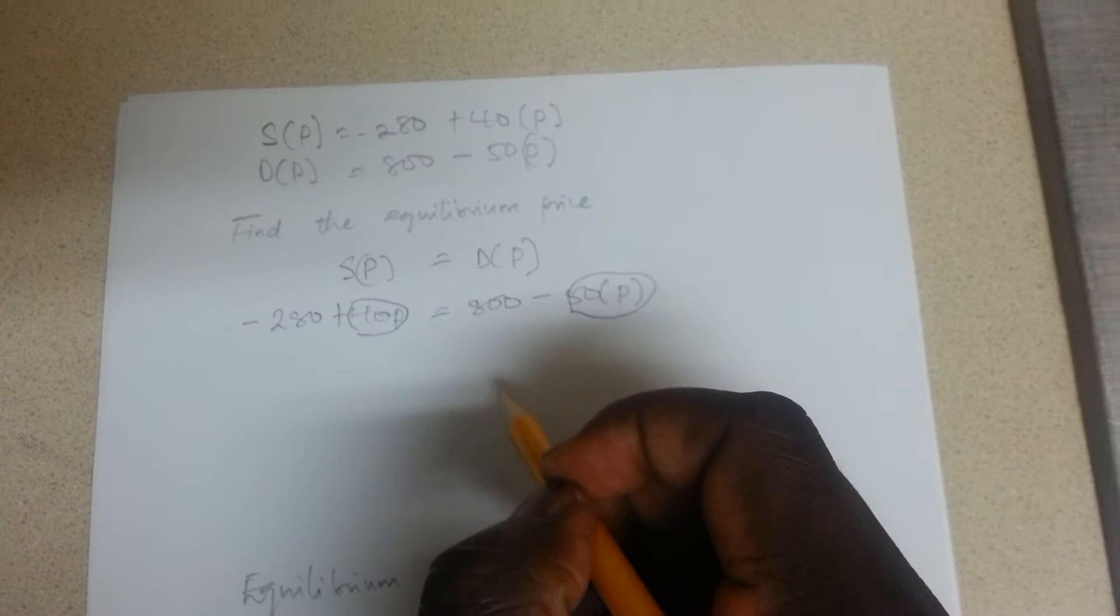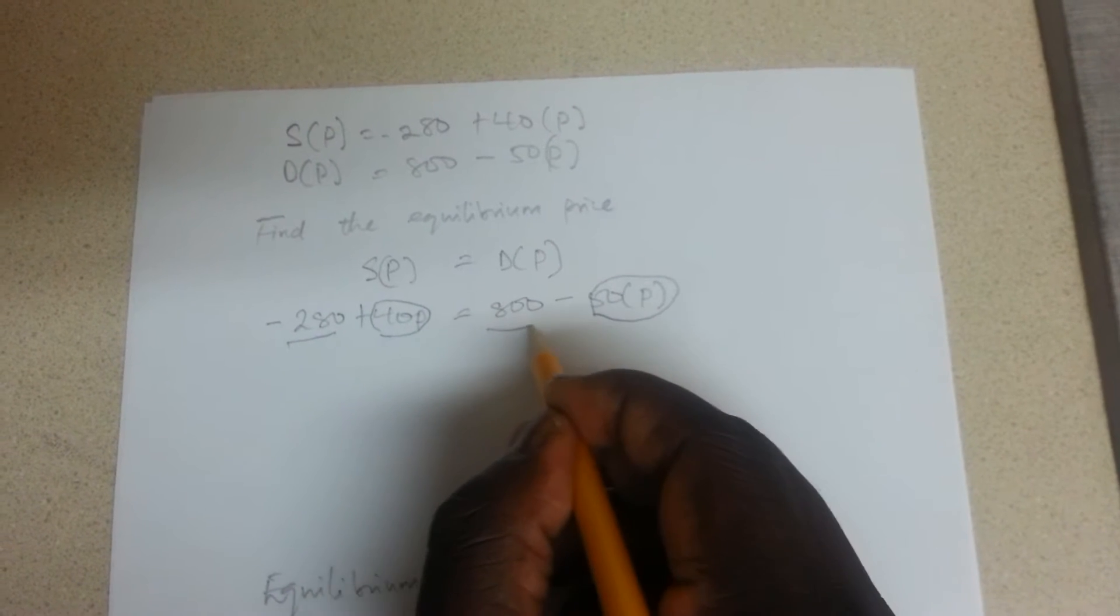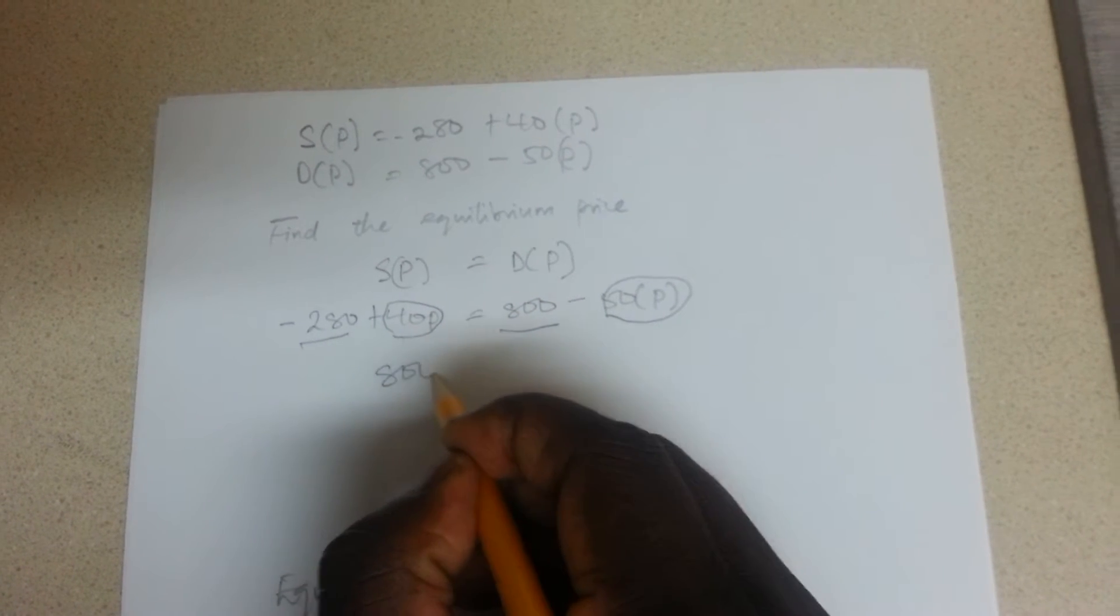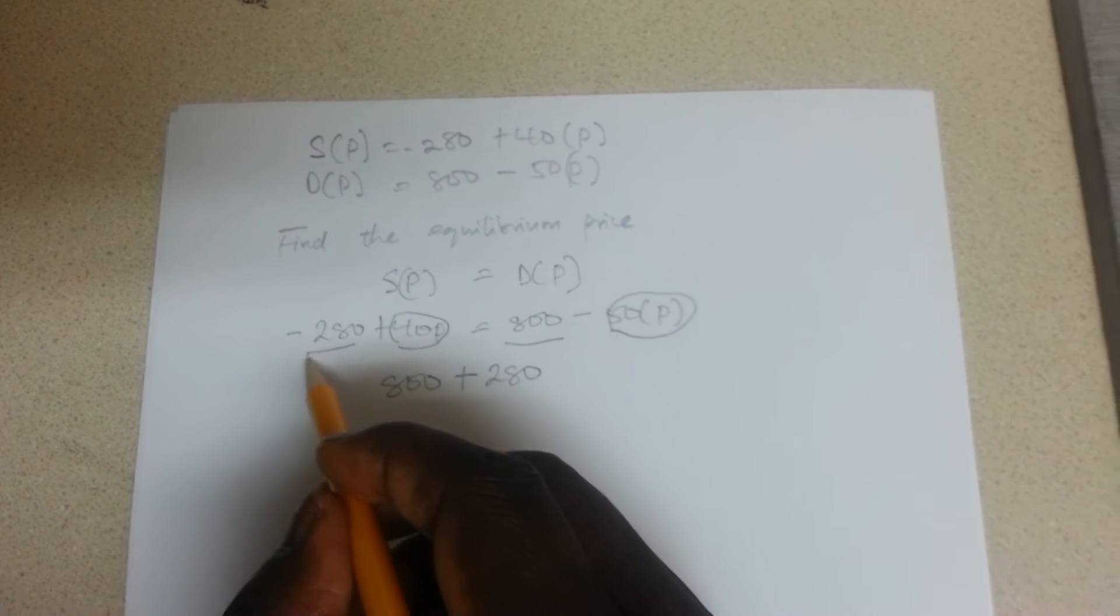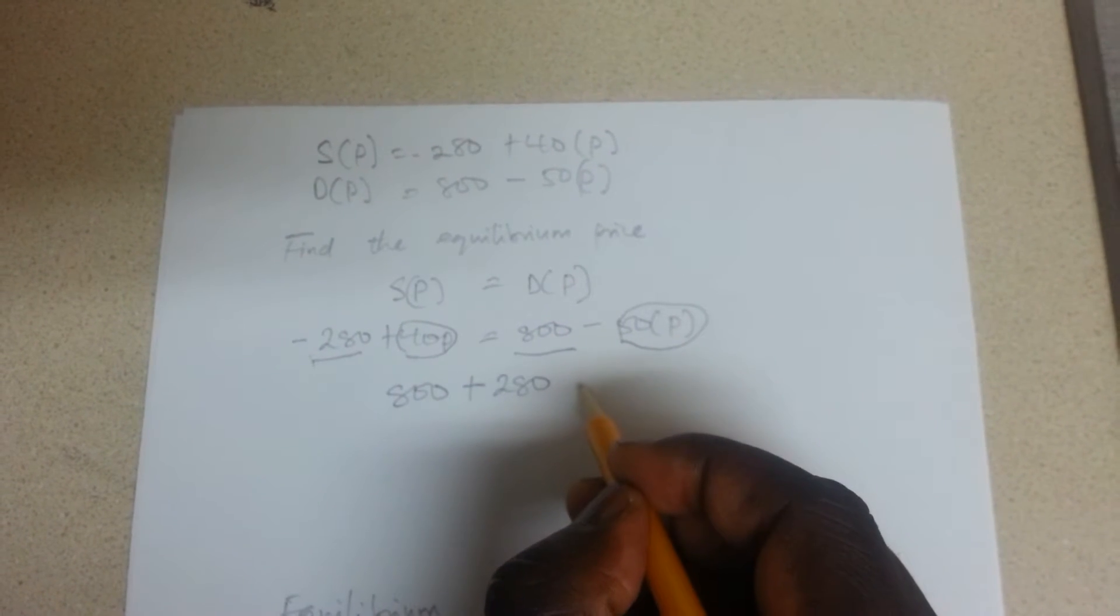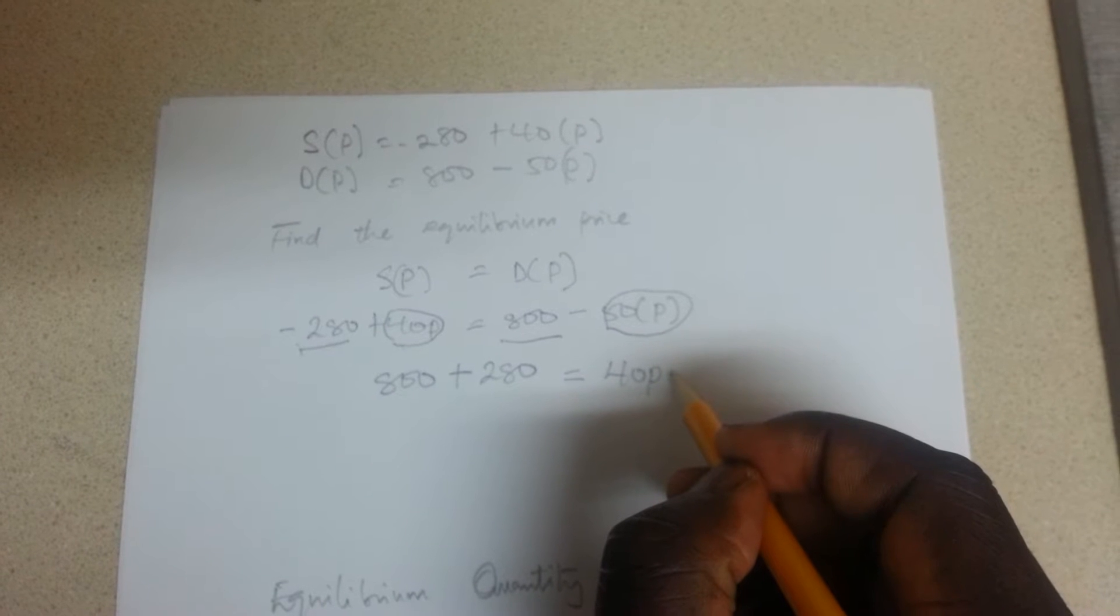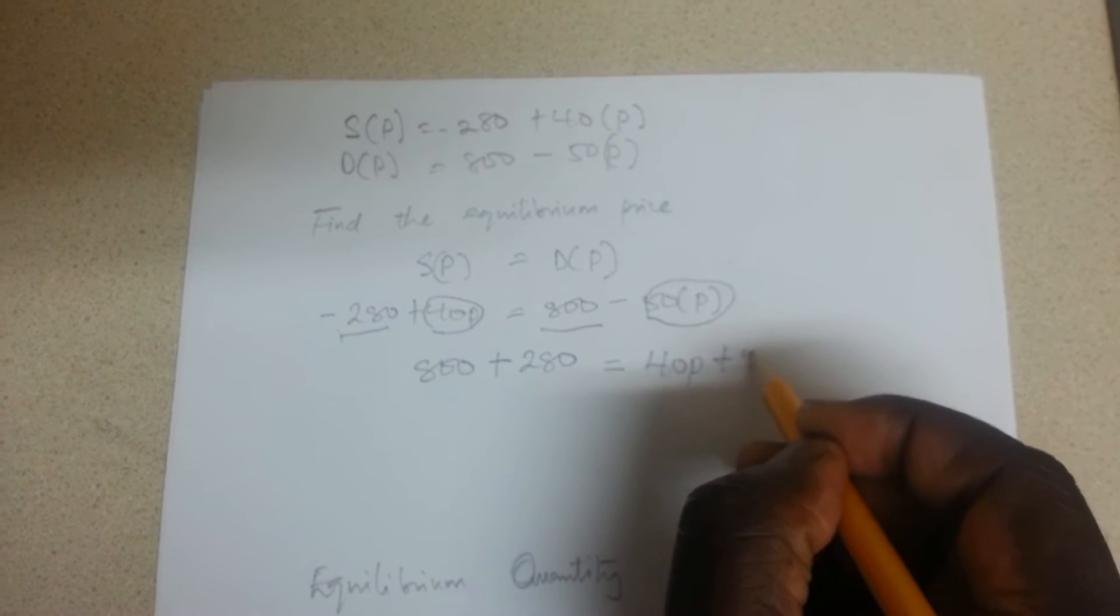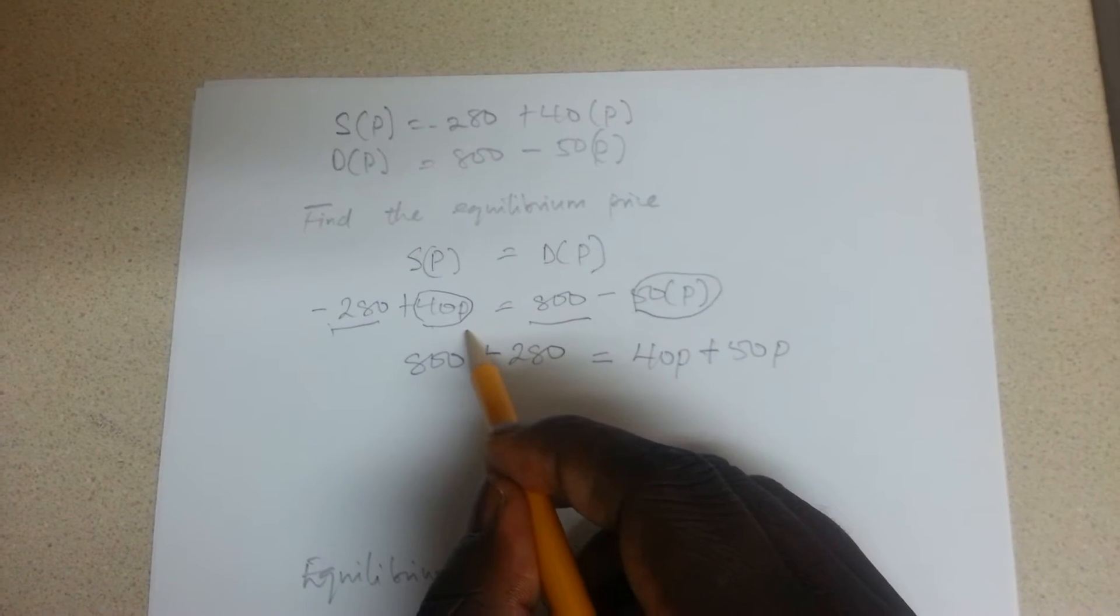You have to marry each other. So when taking this term to this side, you have to do 800 plus 280. This sign has to change to plus when it's coming to meet this side, so you get 40P.